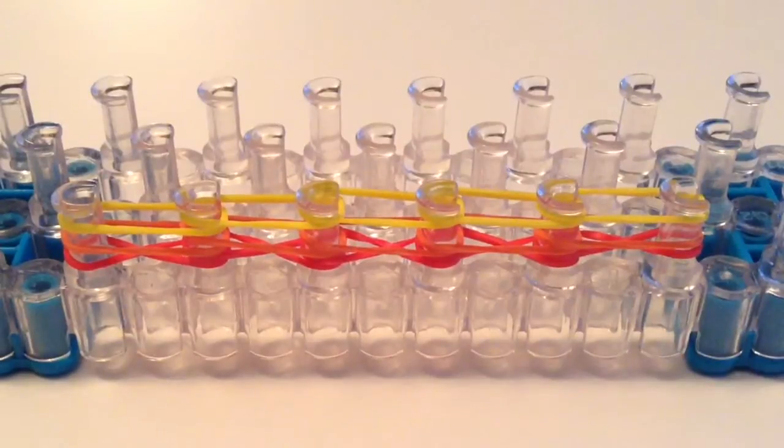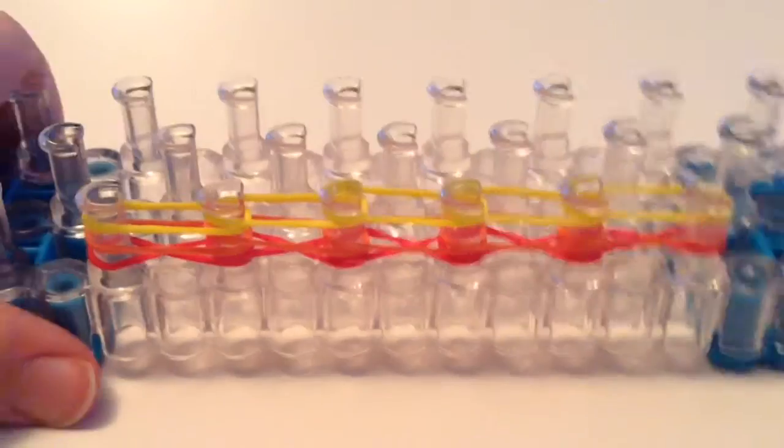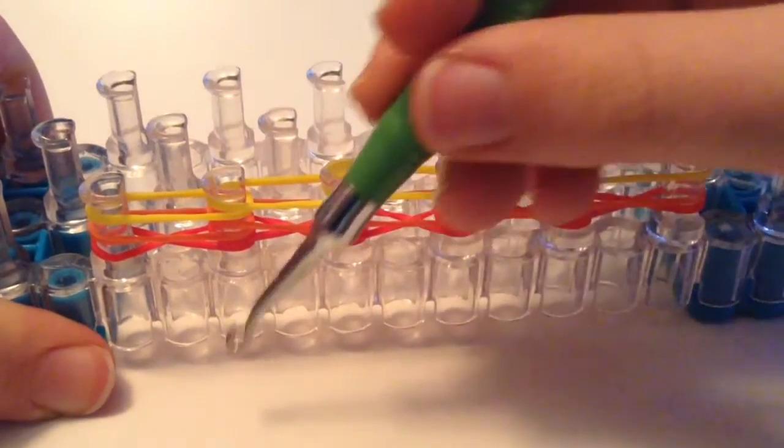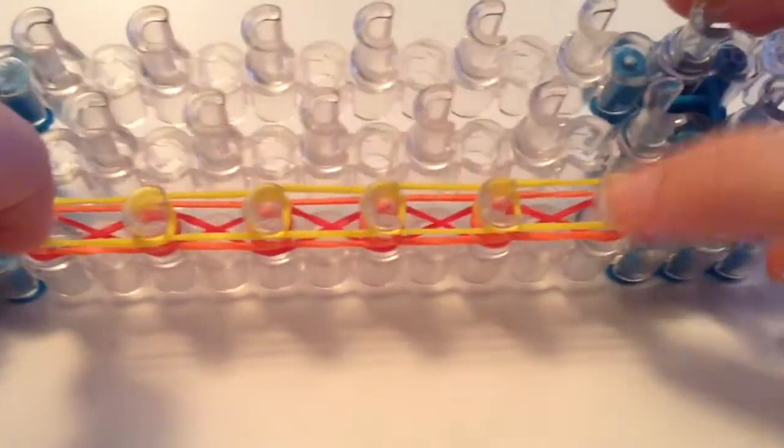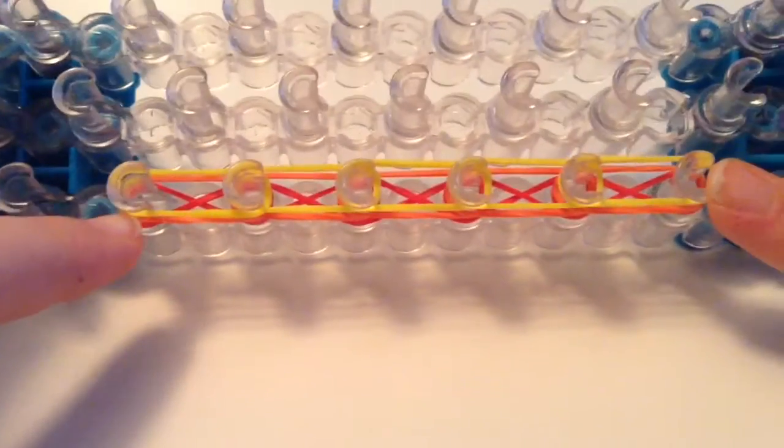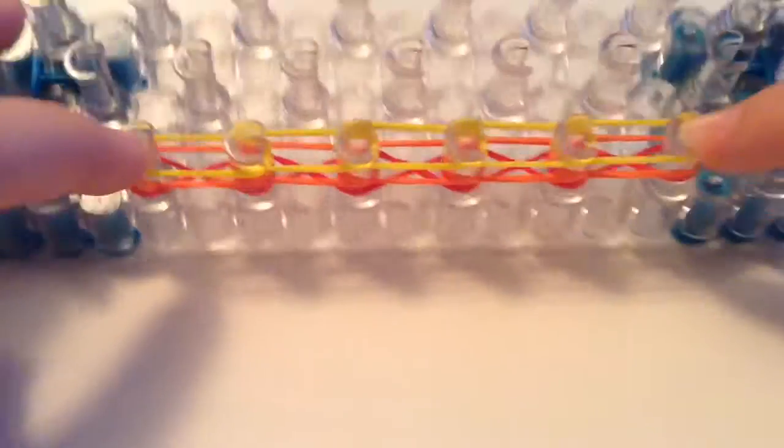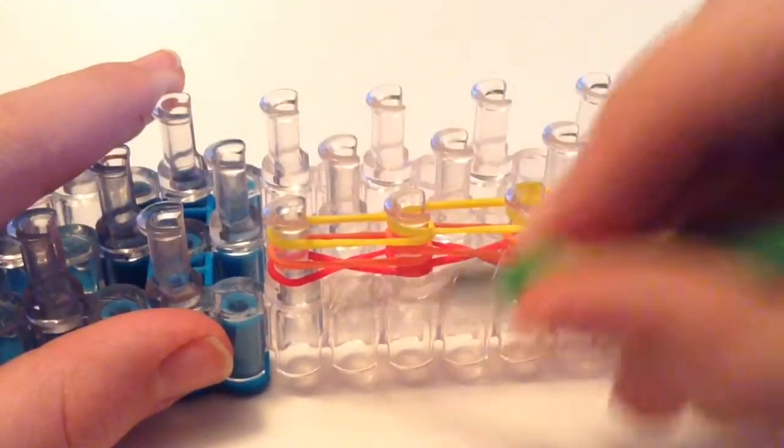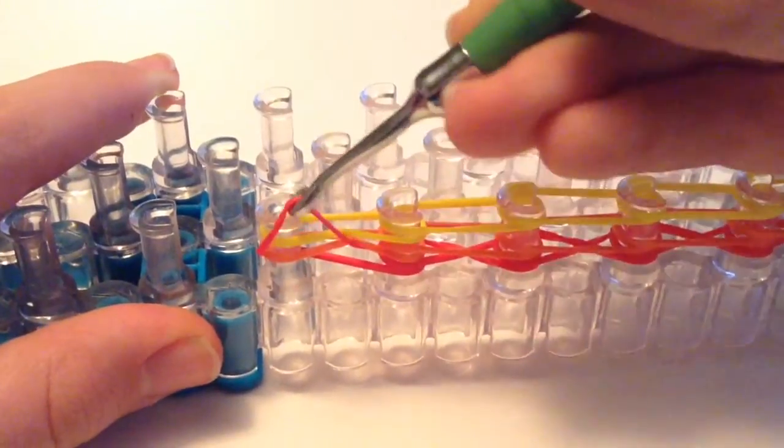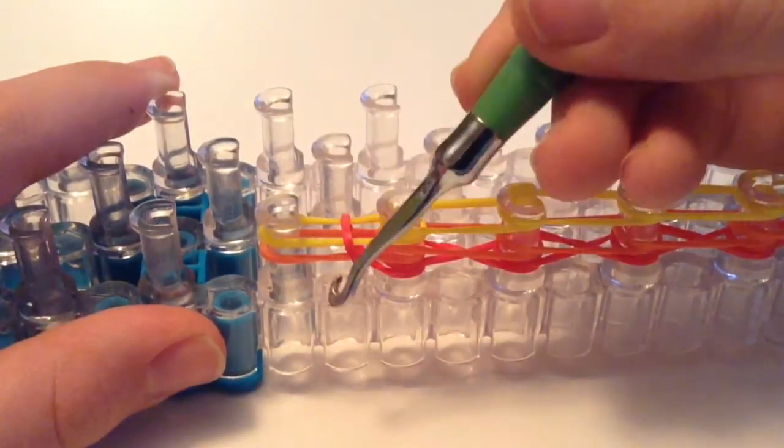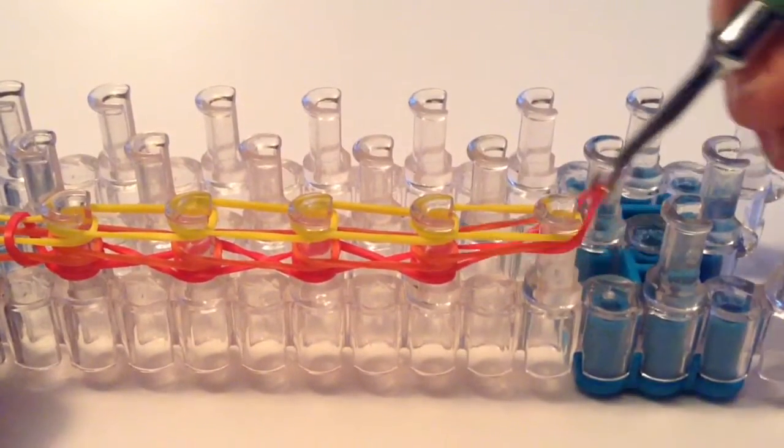And now we're going to do the first hooking process. So take your hook. And you're going to, on this first pin, on the two outer pins, you're going to grab the bottom band to hook it up and over. Just one band. It should be the first color that you put on. Same on the other side.